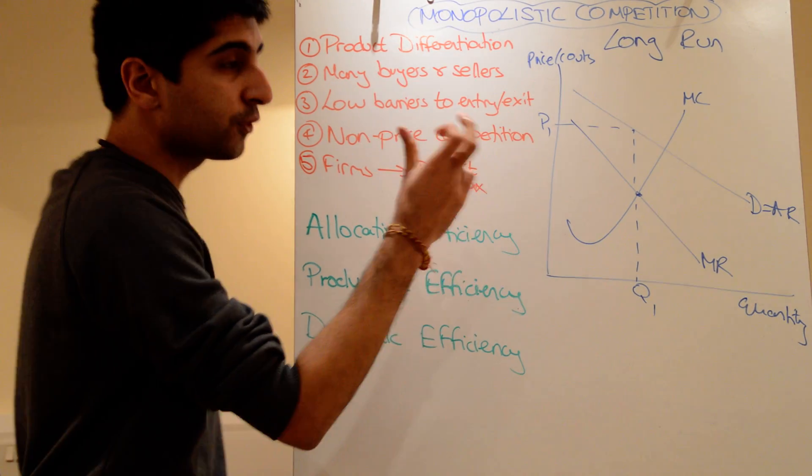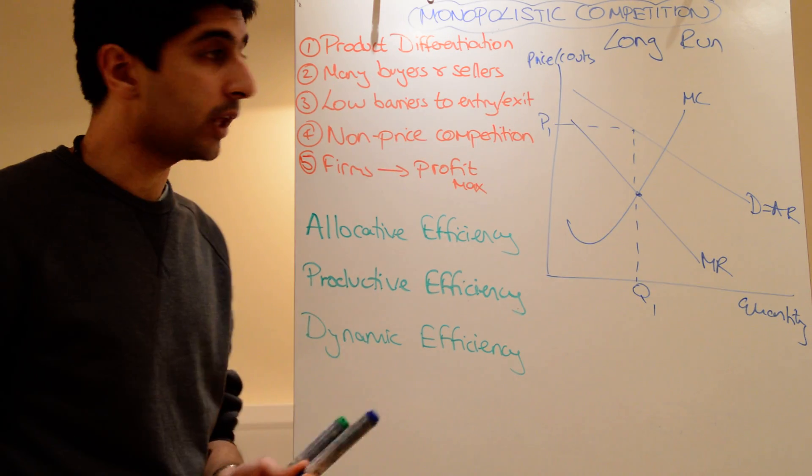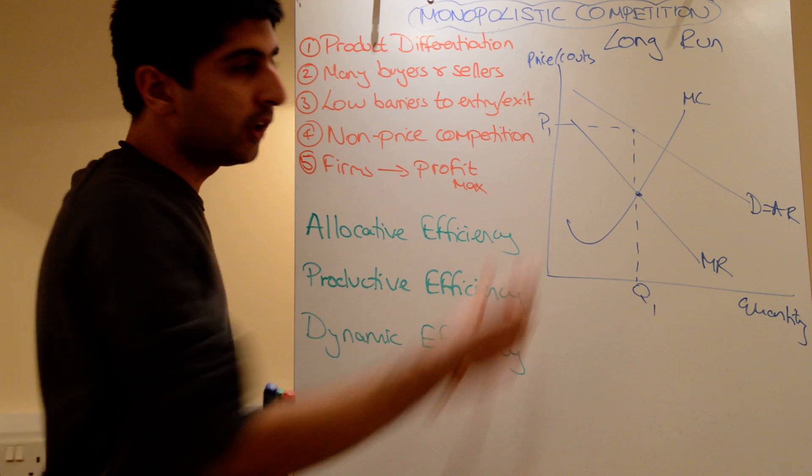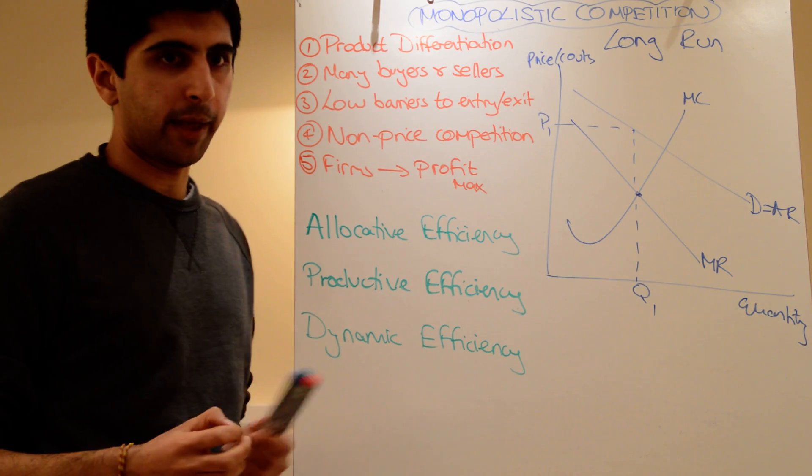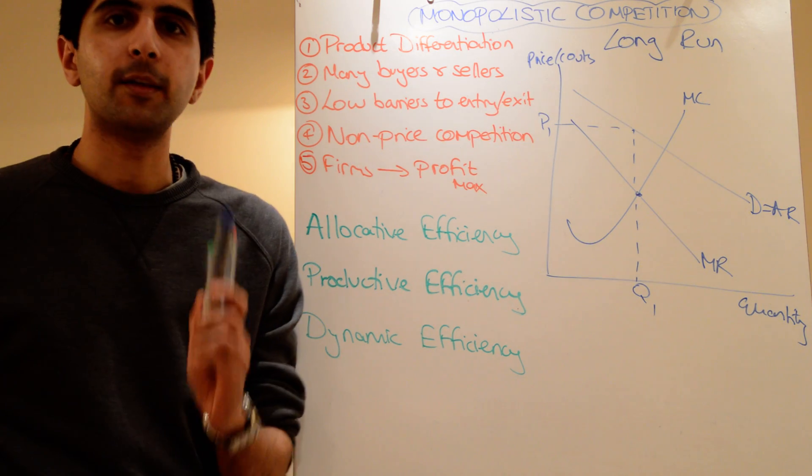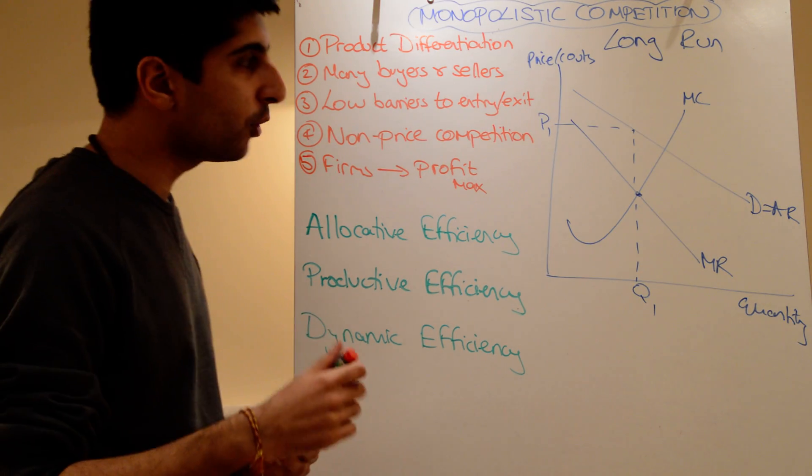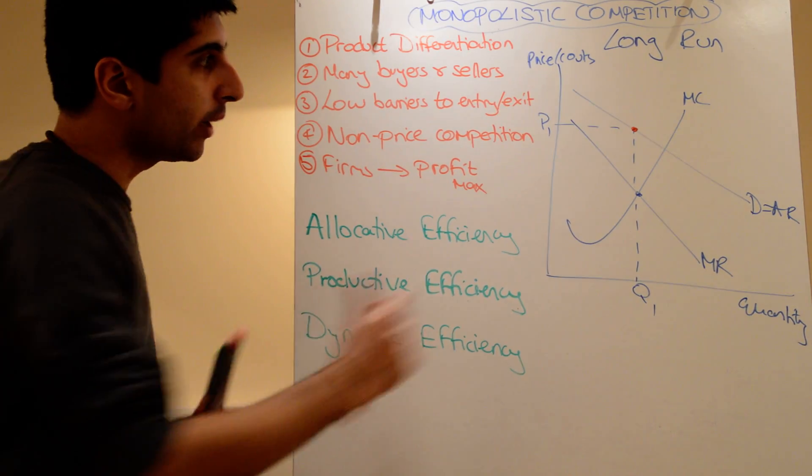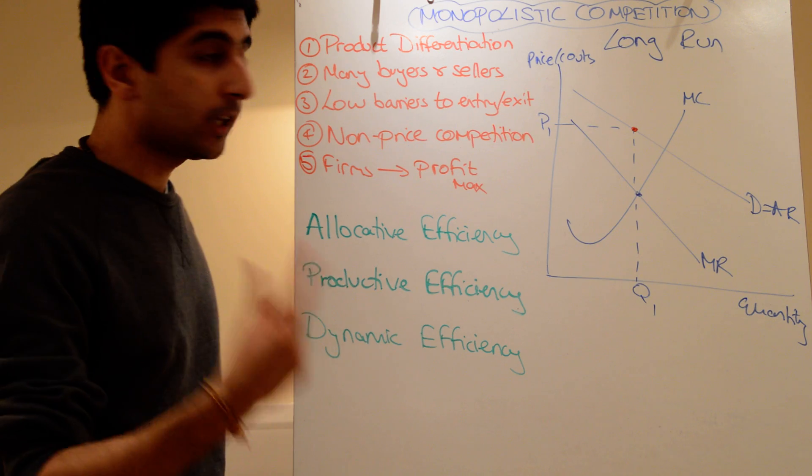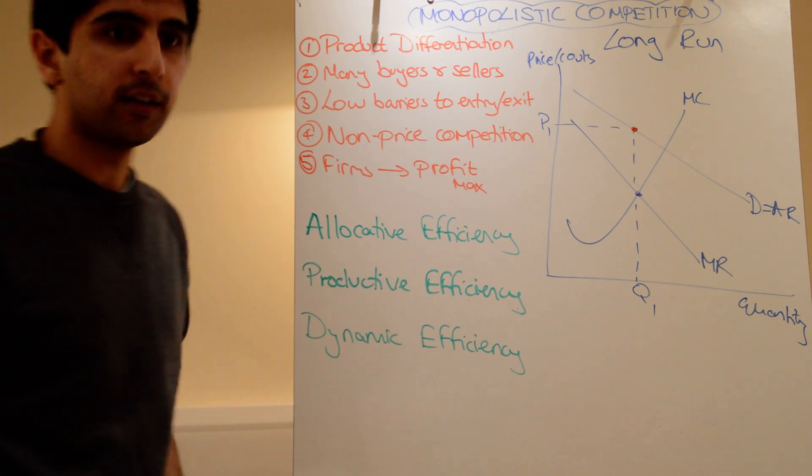Now, what we've said is that supernormal profits act as a signal for new firms to get into the market. They always will. So in the long run, the only place where we're going to have a stable equilibrium is when normal profits are being made. And we know normal profits are made where average revenue equals average cost. So where's the point of production? The point of production is there, in red. So at that point there, average revenue must equal average cost. Well, there's average revenue, so our average cost must touch that point.